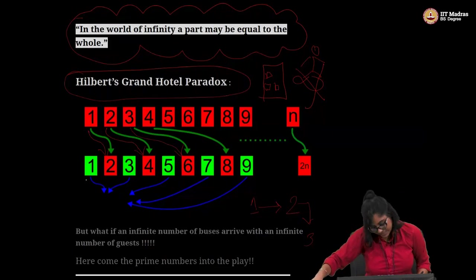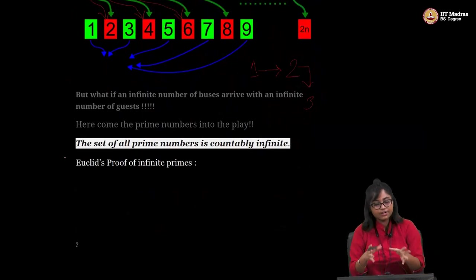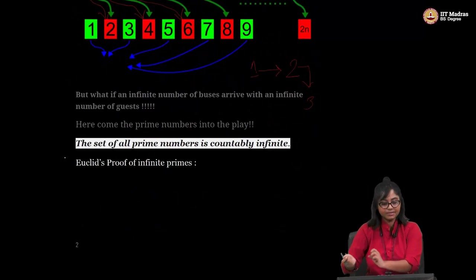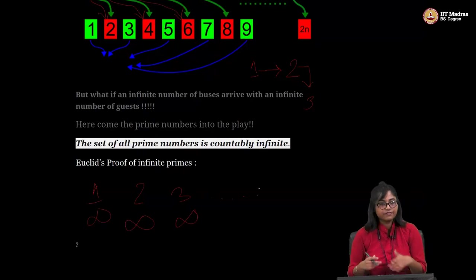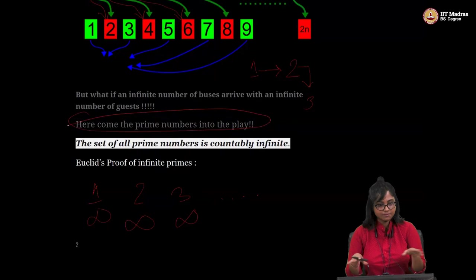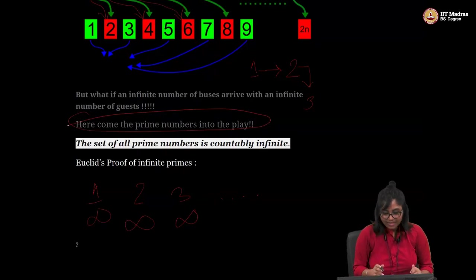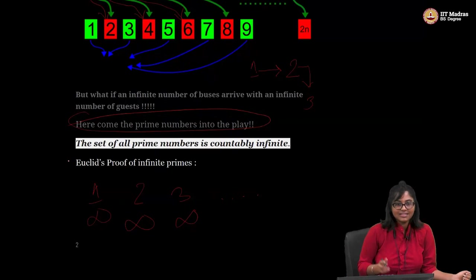Now I'm not still satisfied. Here I have another question. But what if an infinite number of buses arrives with infinite number of guests? Bus number one has infinite number of guests. Bus number two has infinite number of guests. Bus number three has infinite number of guests and so on. What would you do? So the manager says, wait, we have a plan for that also. Now here the prime numbers come into play. Prime numbers are very important mathematics. They can give you a fields medal. They can give you a Nobel prize.